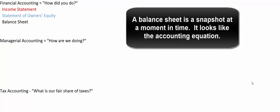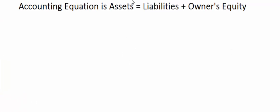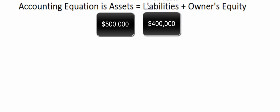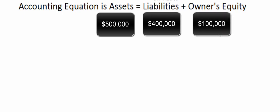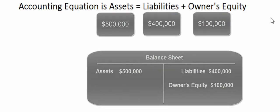The next financial statement is the balance sheet. It's a snapshot at a moment in time and embodies what we call the accounting equation: assets equal liabilities plus owner's equity. If you buy a house for five hundred thousand dollars, that's your asset. If you put a loan on it for four hundred thousand dollars, your equity is a hundred thousand dollars. Same with a company — if they have five hundred thousand dollars of assets and four hundred thousand dollars of liabilities, then that hundred thousand dollars left is the owner's equity.